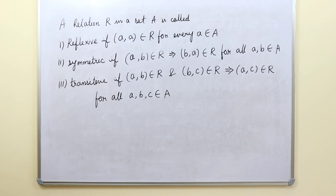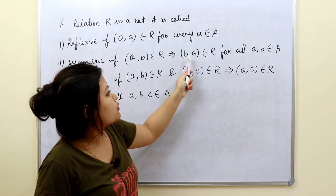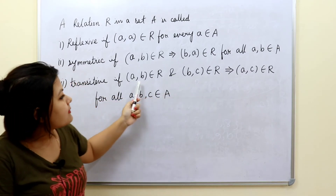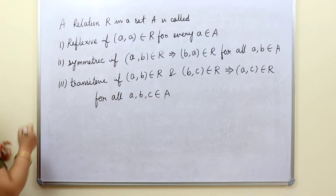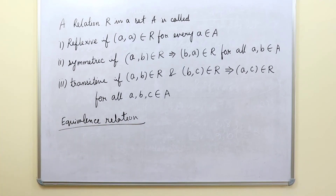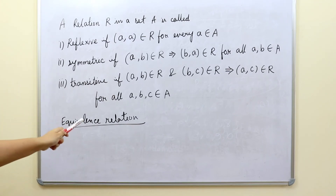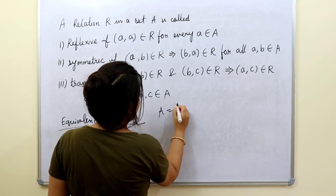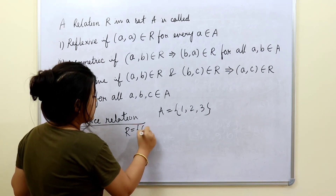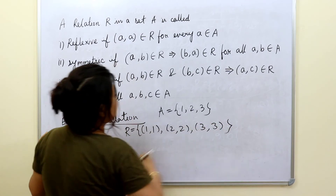Let us discuss some definitions of types of relations. A relation R in a set A is called reflexive if (a, a) belongs to R for every a belonging to A. It is called symmetric if (a, b) belongs to R implies (b, a) belongs to R for all a, b in A. It is called transitive if (a, b) belongs to R and (b, c) belongs to R together imply that (a, c) belongs to R. Suppose A = {1, 2, 3}. For R to be reflexive, (1,1), (2,2), (3,3) should be included.